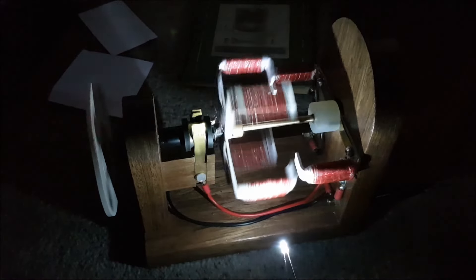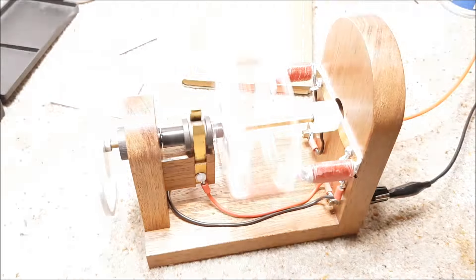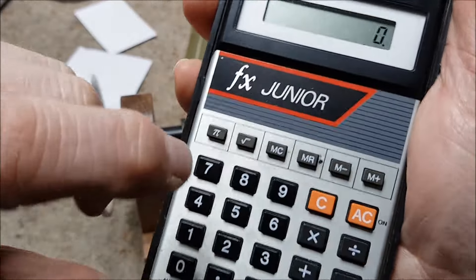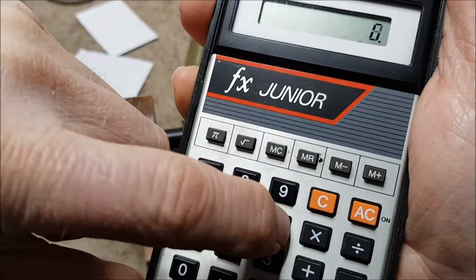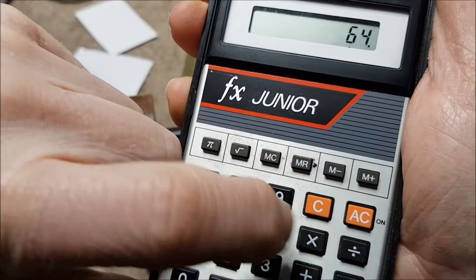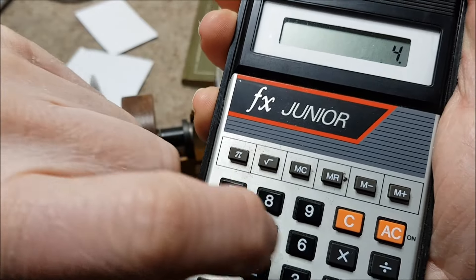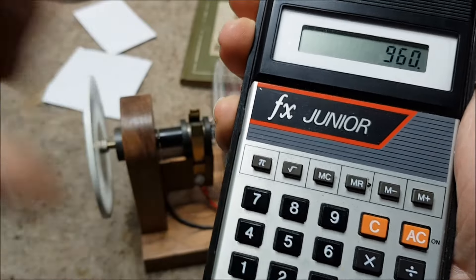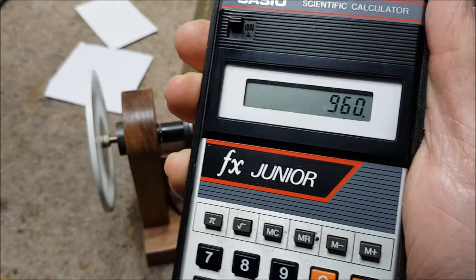We can work out now what the actual rotational speed is with a simple sum. There's four pole pieces, by the way. If I take the 64 cycles or 64 hertz, divide that by the four pole pieces, and then multiply that by 60 seconds, that should give us RPM. That works out at 960 RPM.